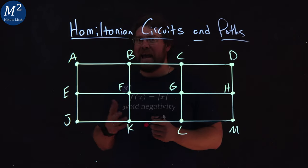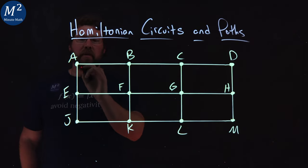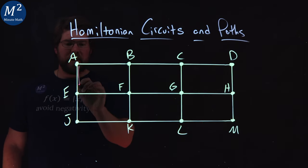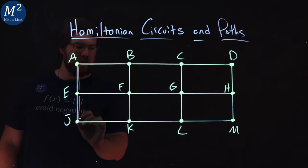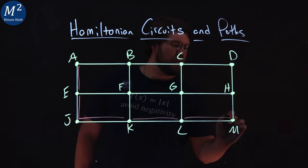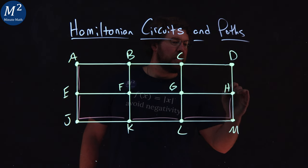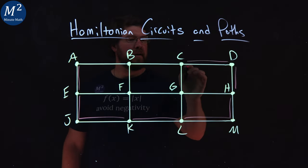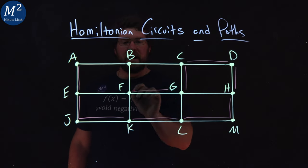Let's start with A here. So we have A and we're going to see if we have every single vertex. I'm going to go down from A to E to J to K to L to M to H up to D and then C and then G, F, B.